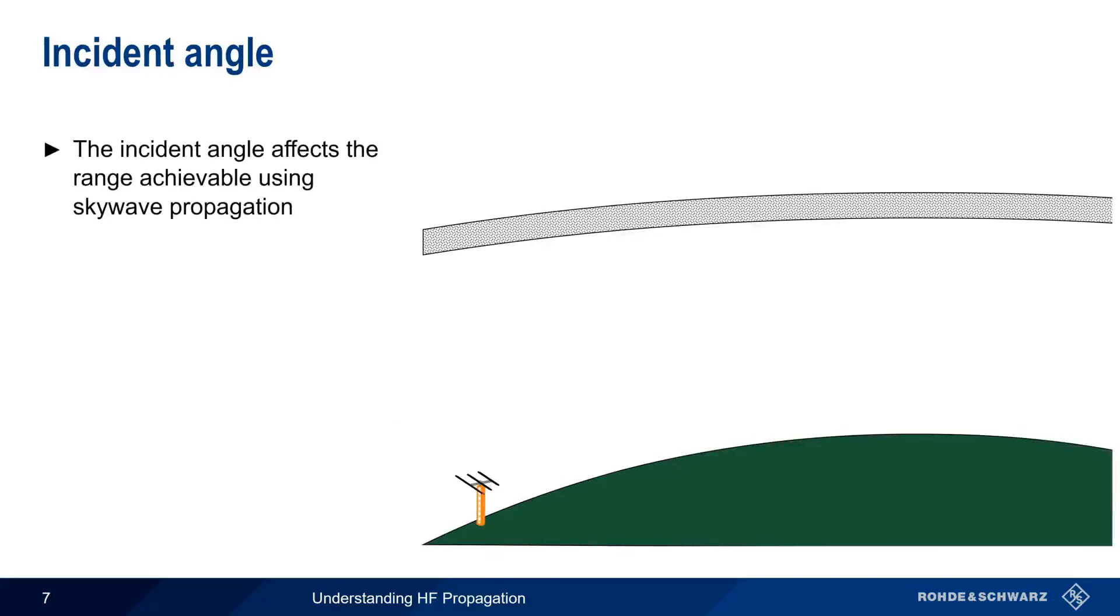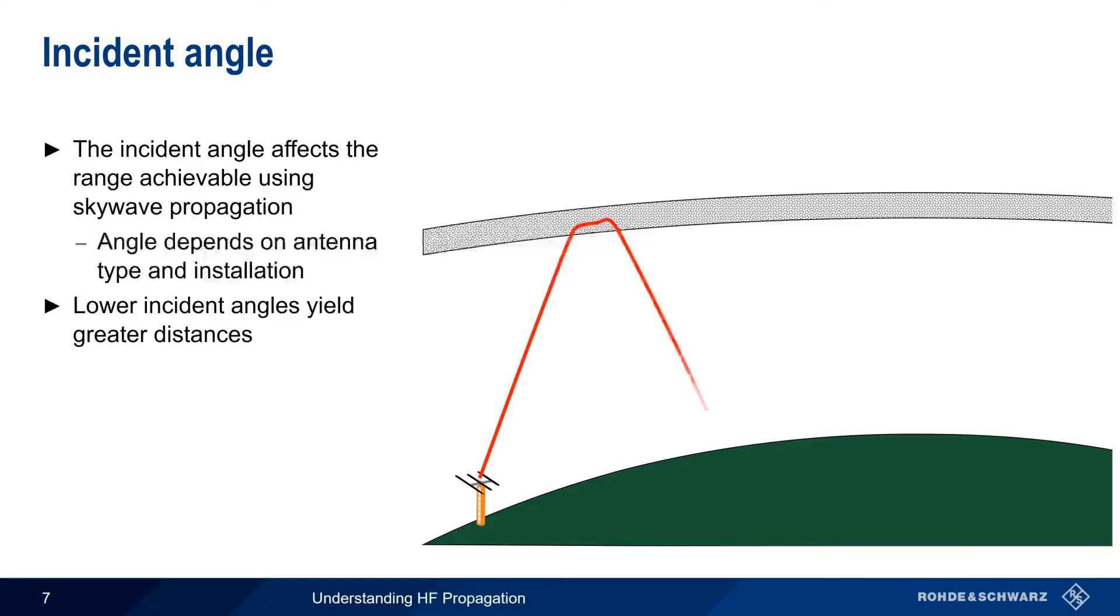The incident angle, or the angle at which a signal reaches the ionosphere, also plays an important role in how far a SkyWave signal will propagate. The radiation angle of an antenna is primarily a function both of the type of antenna and the location at which the antenna is installed. Higher placement of an antenna usually lowers the radiation and incident angles. And generally speaking, the lower the incident angle, the greater the distance that is covered by SkyWave propagation.